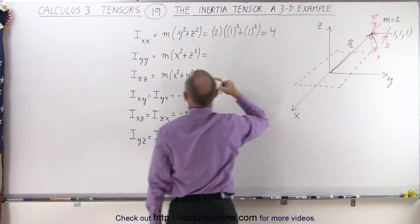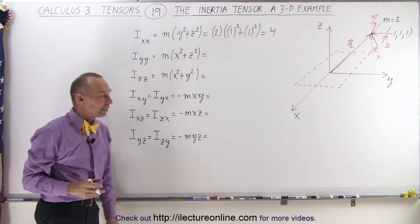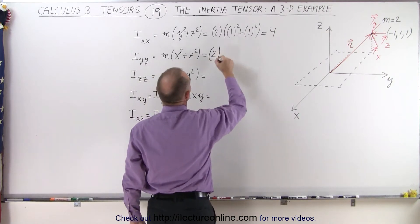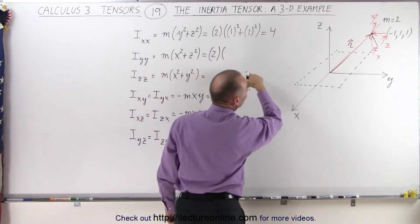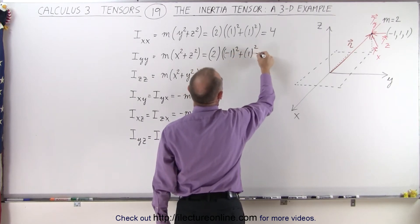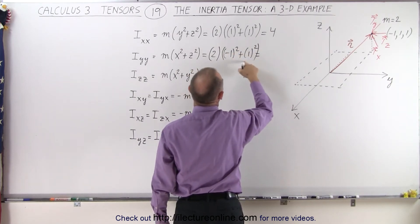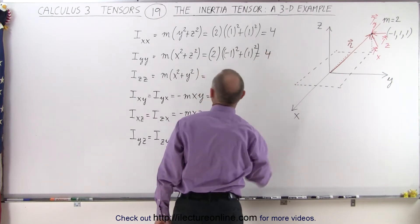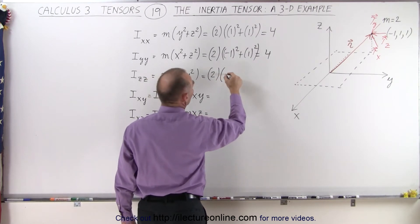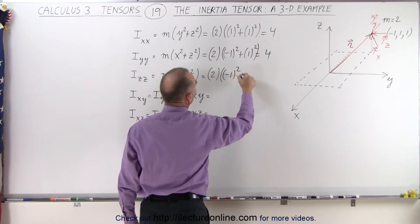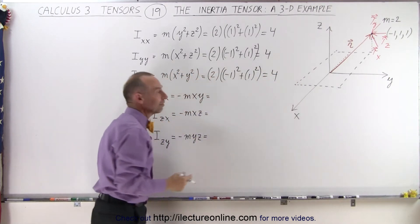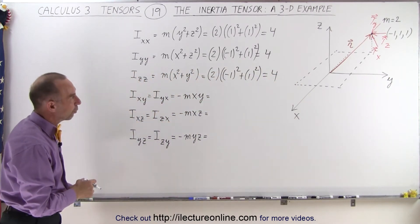The middle diagonal element, Iyy, is going to be 2 times x plus z, both of them squared, so minus 1 squared plus 1 squared. Again, that will be equal to about 2 times 2, which is 4. And for the Izz term, we have 2 times x, which is minus 1 squared, plus 1 squared, and that's also going to be 4. So you see that the value for diagonal terms are all going to be equal to 4.